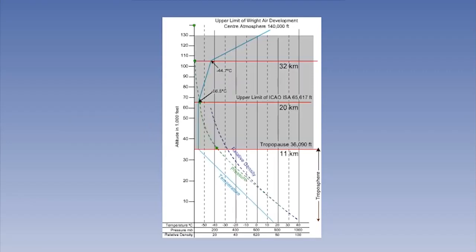From this point onwards, we have the stratosphere, and ISA assumes the temperature within the first part of this layer remains constant at minus 56.5 degrees Celsius, up to 20 kilometers, or 65,617 feet.